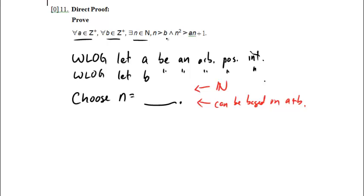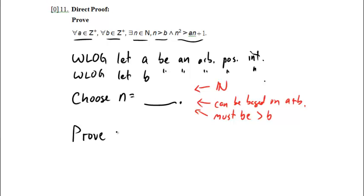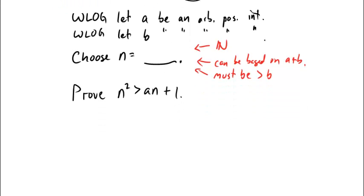Now I need to prove n greater than b — that's not too hard since I get to choose n, so it must be greater than b. I also need to prove n squared is greater than a·n plus 1. This is an inequality proof, so I know I'll start from one side and work to the other, but it's not immediately clear how. So at this point I'm switching to scratch work.